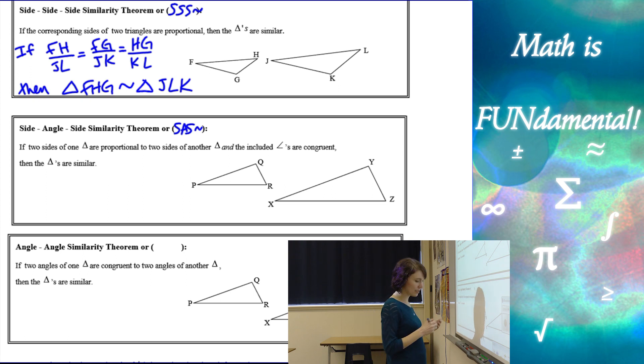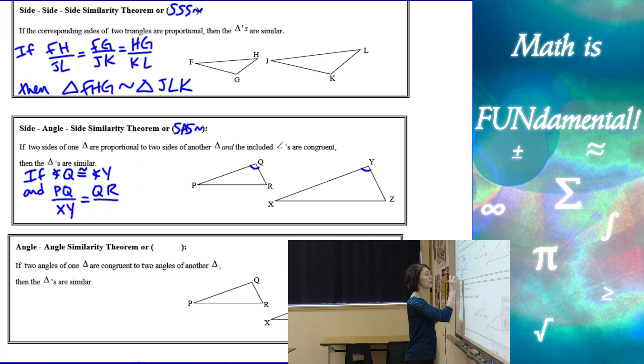So what would need to be true is whichever angle we have that's congruent. Let's just say we had Q and Y. So if angle Q is congruent to angle Y and we knew that the two sides on either side of that angle, PQ and QR, are proportional to the corresponding sides of the other triangle. So if PQ over XY was equal to QR over YZ,